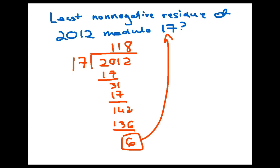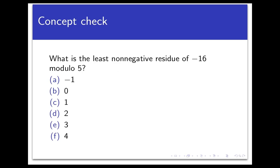To check we can just rewrite the division algorithm result as 2012 equals 17 times 118 plus 6. Now subtract the remainder to get 2012 minus 6 equals 17 times 118 and you can see here that 2012 is indeed congruent to 6 mod 17. So one quick concept check before we're done. What's the least non-negative residue of negative 16 mod 5? Well you can automatically rule out A because we're looking for the least non-negative residue so anything that's negative is out automatically.